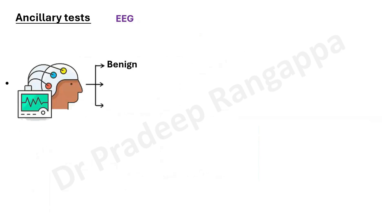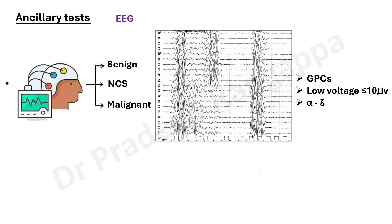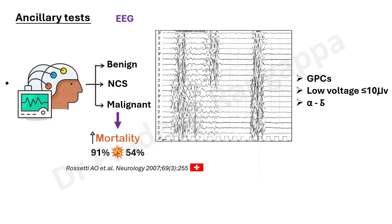EEG in hypoxic ischemic encephalopathy is divided into three categories: benign, non-convulsive status, and malignant EEG. Malignant EEG includes burst suppression patterns — bursts of activity followed by suppression — generalized periodic complexes, low voltage less than 10 microvolts, or alpha-theta pattern. These malignant EEG patterns are associated with very poor outcome. One study showed mortality of 91% in patients with malignant EEG patterns versus 54% without, establishing EEG as an important adjunct for prognostication.